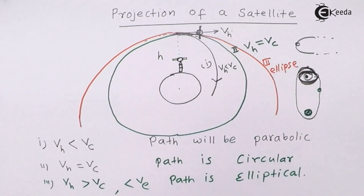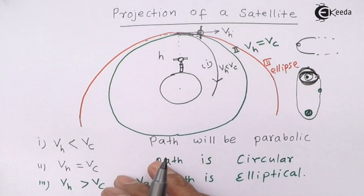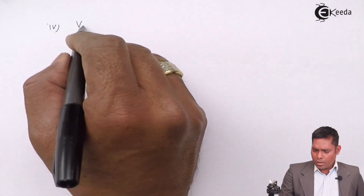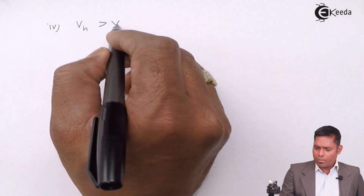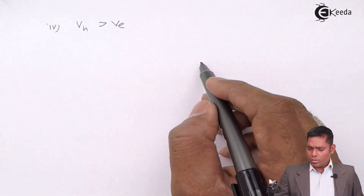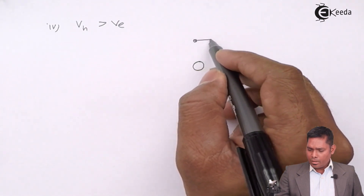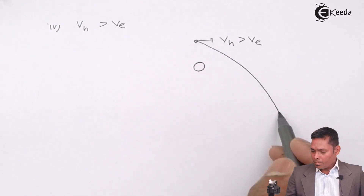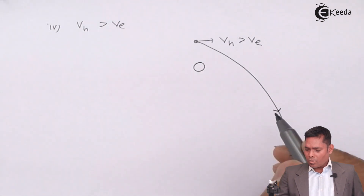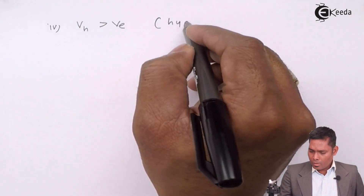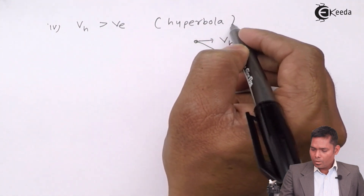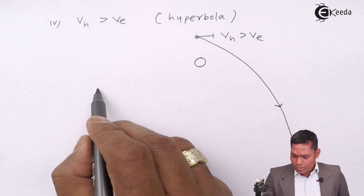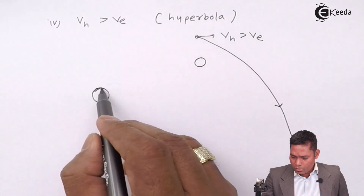The fourth case: if the velocity provided to the satellite is greater than the escape velocity, it will not return to Earth. The satellite escapes, and the path is hyperbolic.